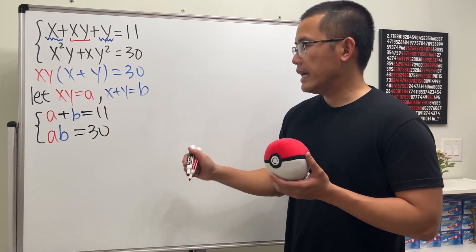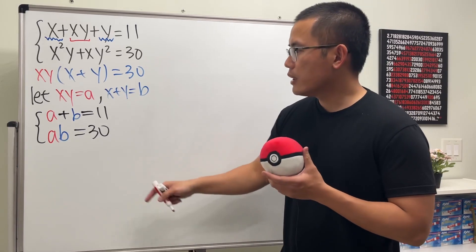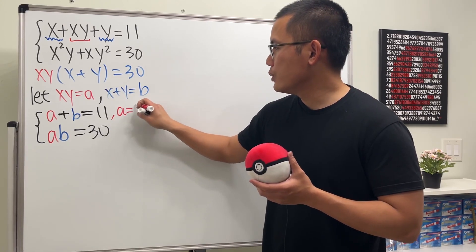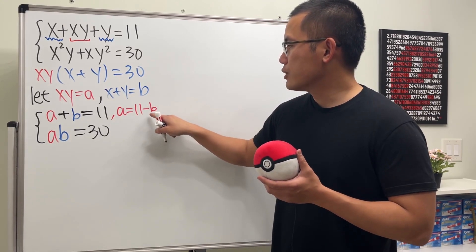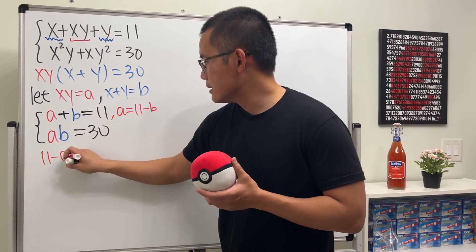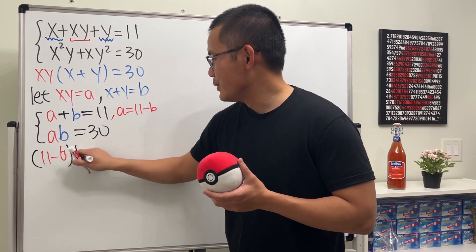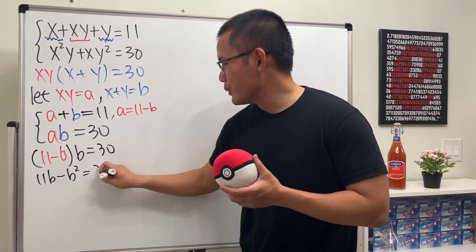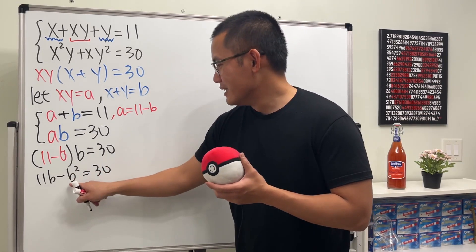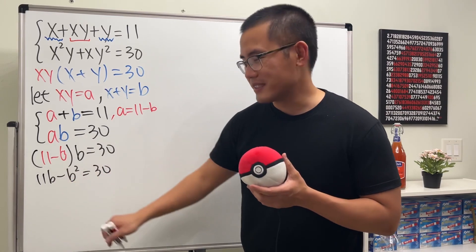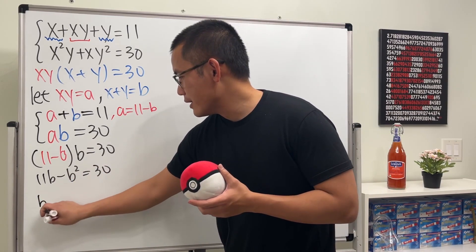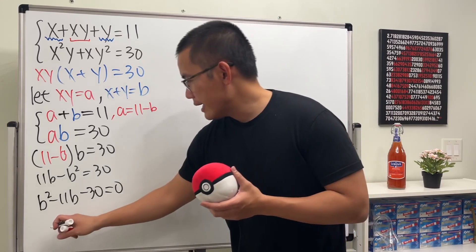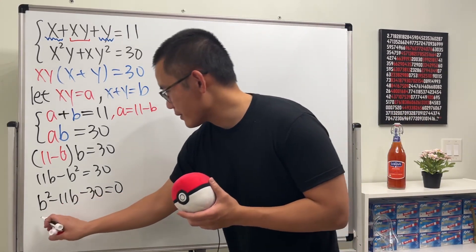This is much easier to work with. Let's proceed with the substitution — I'll isolate 'a', so a equals 11 minus b. Putting this back in gives us (11 minus b) times b equals 30. Multiplying out: 11b minus b squared equals 30. It's a quadratic, so moving terms to the other side: b squared minus 11b plus 30 equals zero.